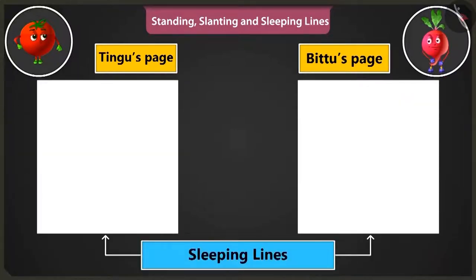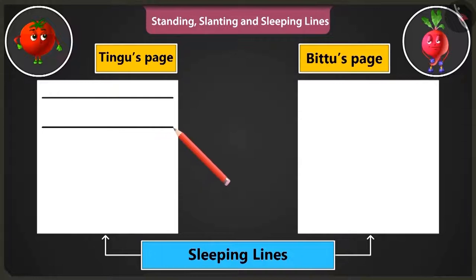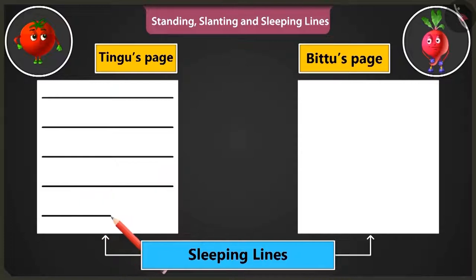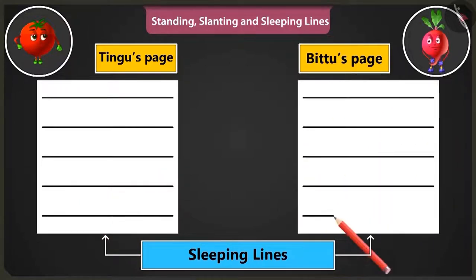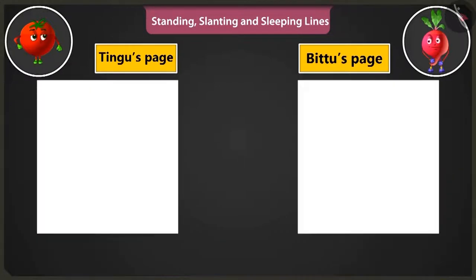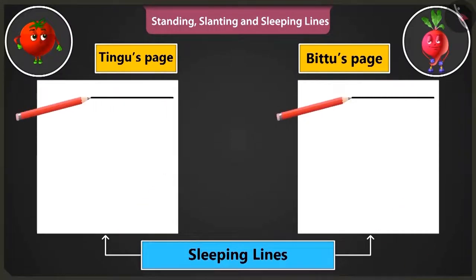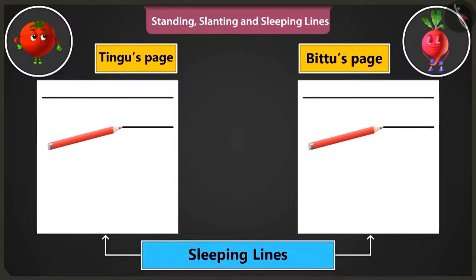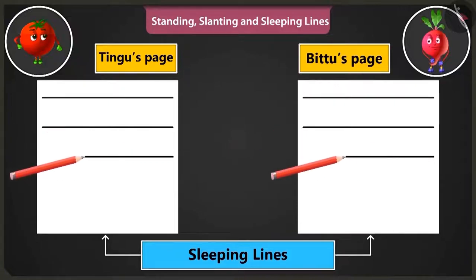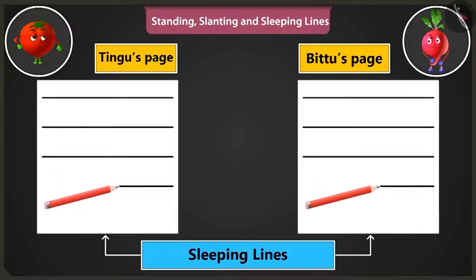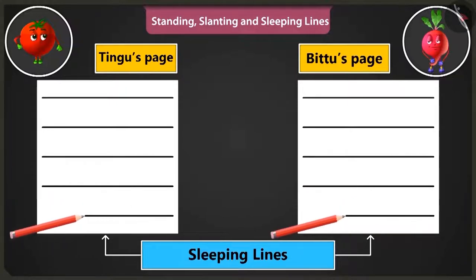Now let's practice making sleeping lines. Draw sleeping lines from the left side of the page to the right, one below the other. Like this. Okay, I am making. Now we have to practice making the sleeping lines from the right side of the page to the left. So we will start from the right side of the page and move towards the left.